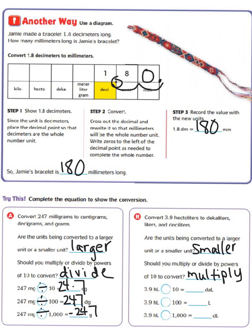So 3 and 9 tenths hectoliters times 10 equals 39 decaliters. 3 and 9 tenths hectoliters times 100 equals 390 liters. 3 and 9 tenths hectoliters times 1,000 equals 3,900 deciliters.